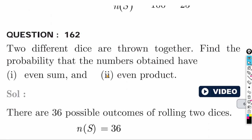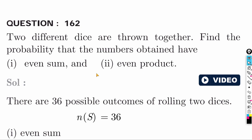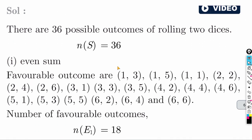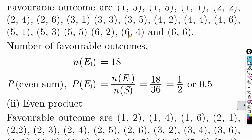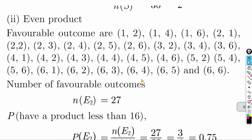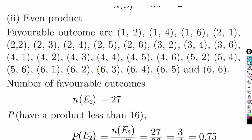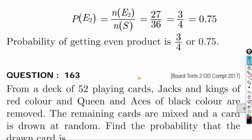Two different dice are thrown together. Find probability that the numbers obtained have an even sum. An even sum occurs when both numbers are even or both are odd. This happens 18 times out of 36. Answer = 18 by 36 = 1 by 2 = 0.5. Find probability of an even product: multiply all values and count even products — total 27 favorable cases. Answer = 27 by 36.